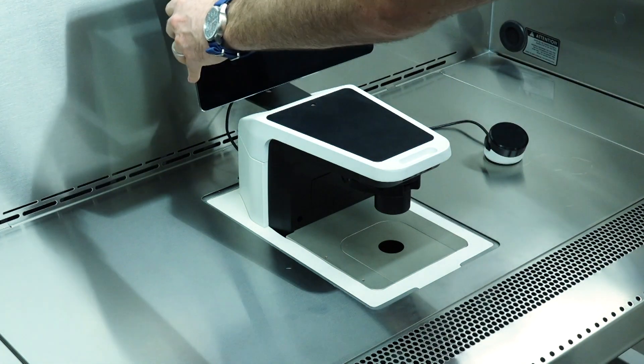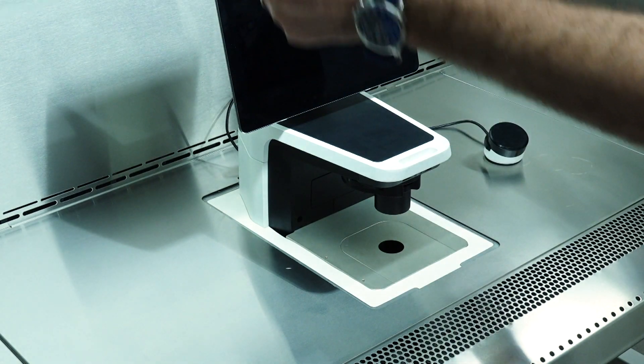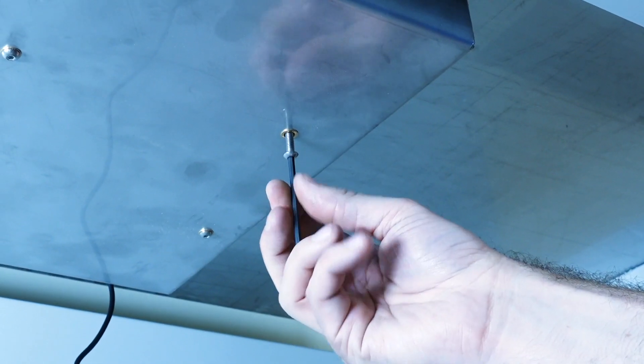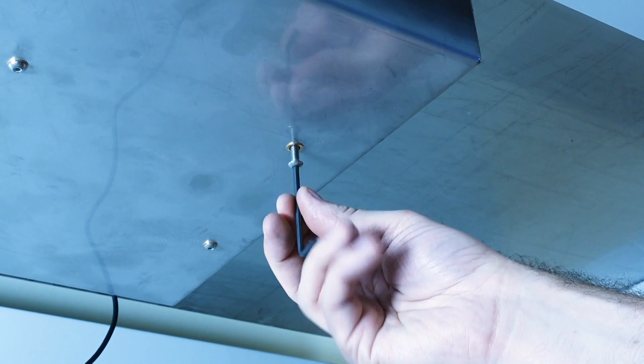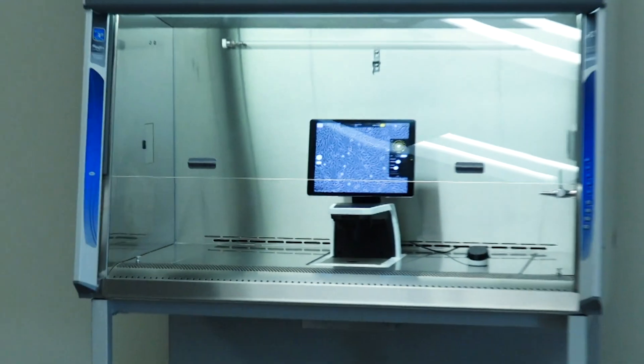If necessary, level the microscope stage to the BSC work surface using the microscope adjustment screws located underneath the biosafety cabinet on the bottom of the sump. You've just completed installing your Rebel Logic Plus biosafety cabinet.